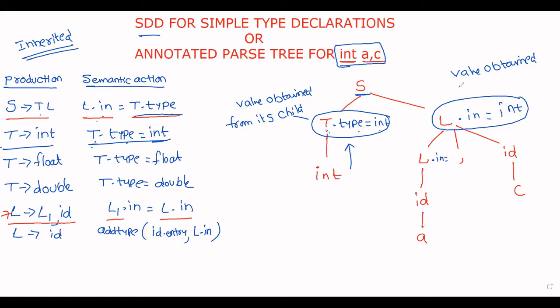In S → TL, L gets the value from its sibling. Now L.in is equal to L.in, which is int — value obtained from the sibling. And further down, L.in is equal to L.in, value obtained from the parent. So this is the annotated parse tree for the given input string. Thank you.